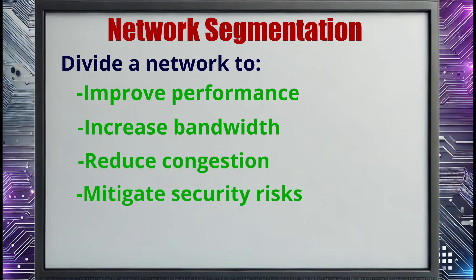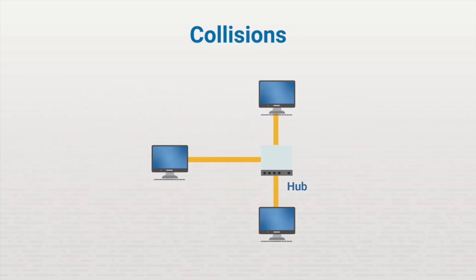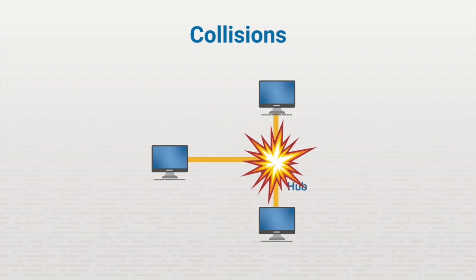Let's first look at a few ways segmentation improves performance and increases bandwidth specifically. On an Ethernet network, performance and bandwidth are greatly reduced when collisions take place. Collisions occur when multiple devices share the same network medium and send packets at the same time. When you segment your devices, you reduce the number of computers that contend for the medium and reduce the number of collisions that can occur, which in turn increases throughput.